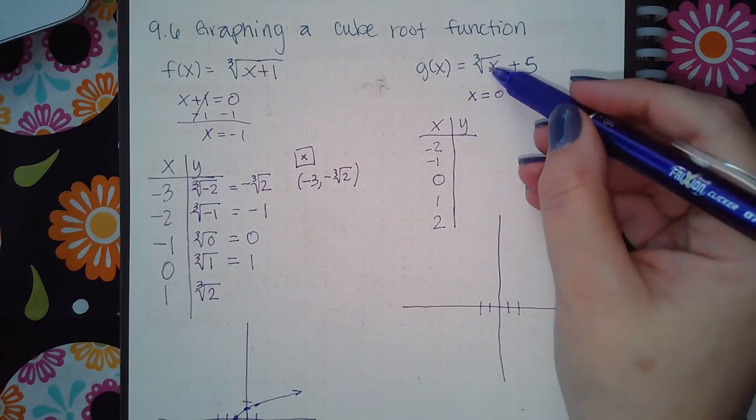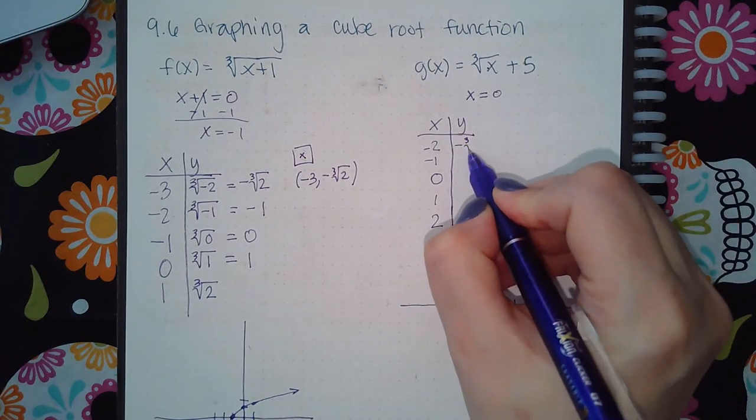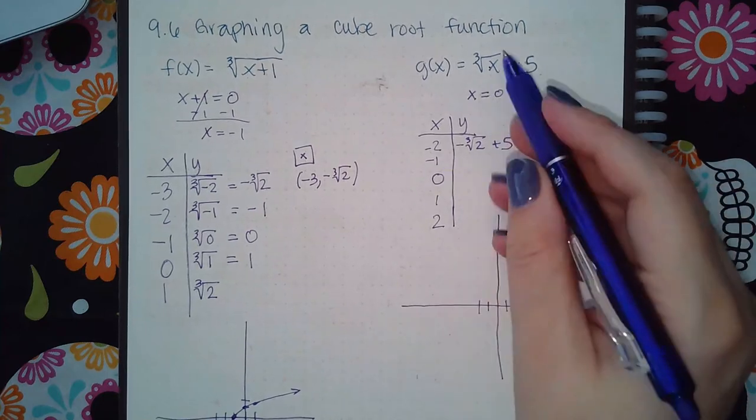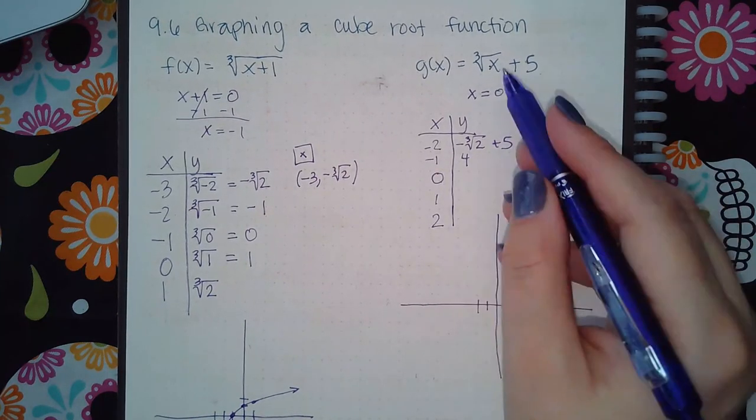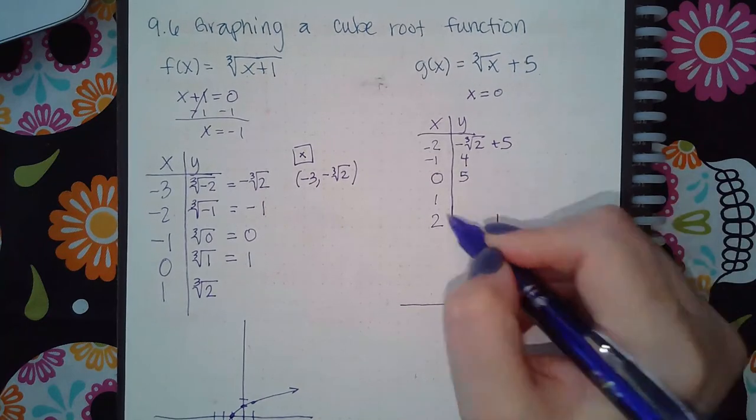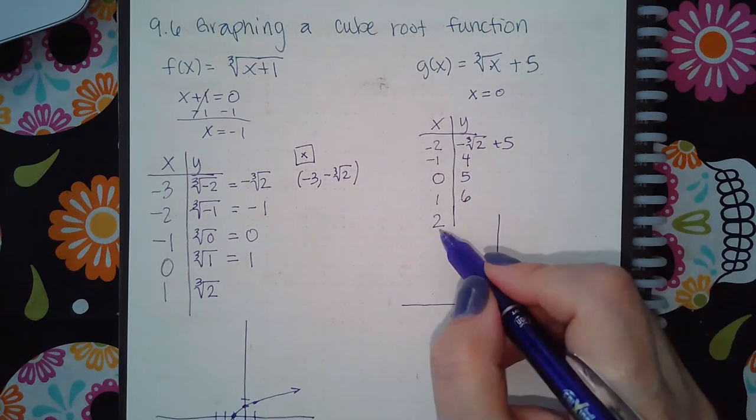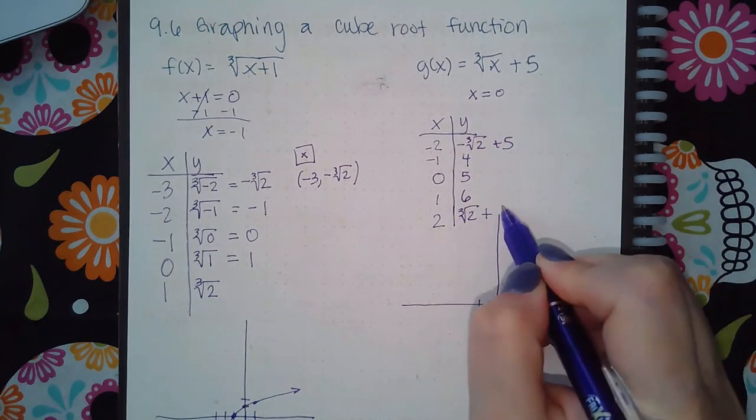I'm going to plug these numbers into this radical and then plus 5. So here I'm going to get negative cube root of 2 plus 5. Here I'm going to get negative 1 plus 5, which is 4. 0 plus 5, which is 5. 1 plus 5, which is 6. And then 2, I'm going to get the cube root of 2 plus 5.